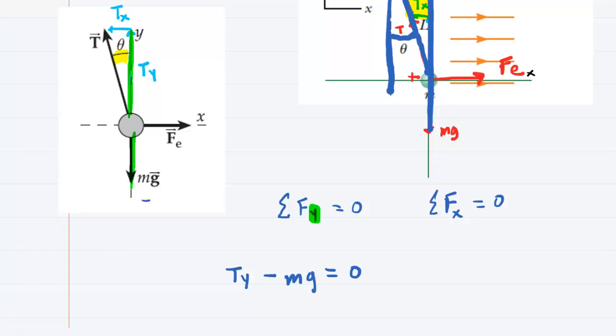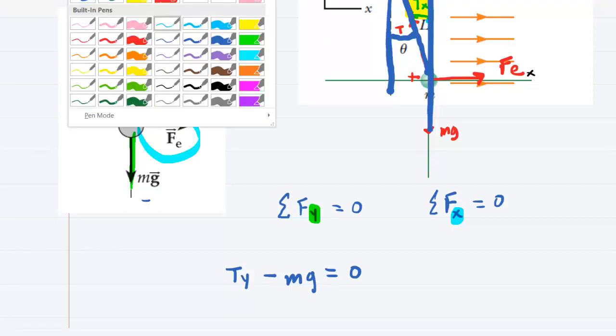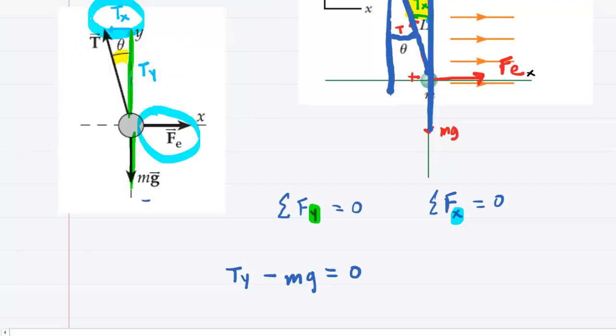In the x direction, we're going to have a couple of forces as well. We have the electric force pointing to the right, and then we have the x component of tension pointing to the left. So for that, we can write that the electric force Fe minus the x component of tension will equal zero.